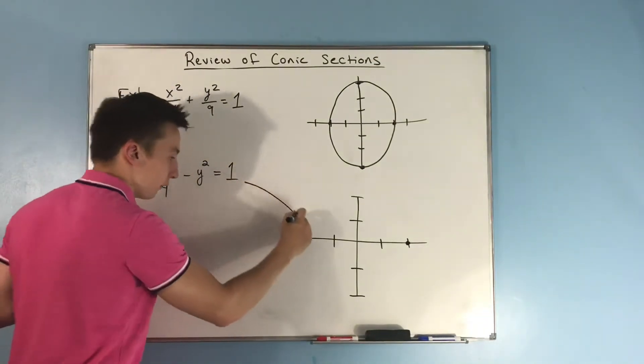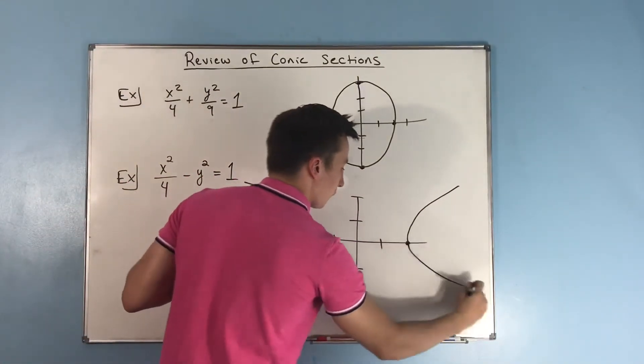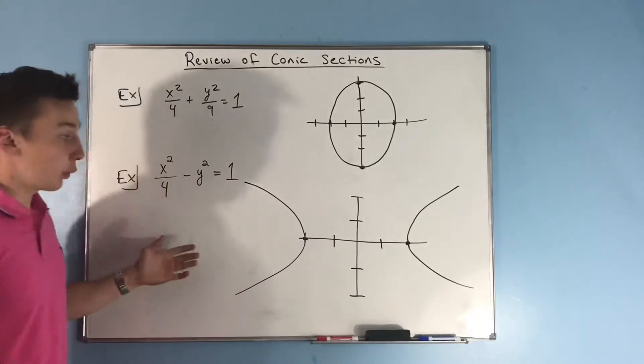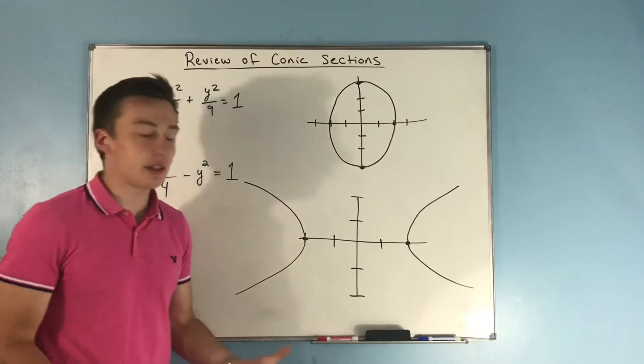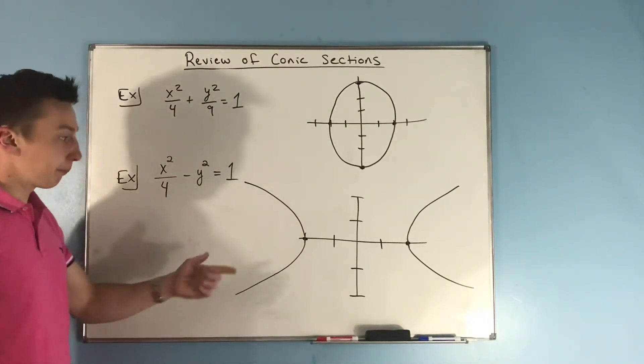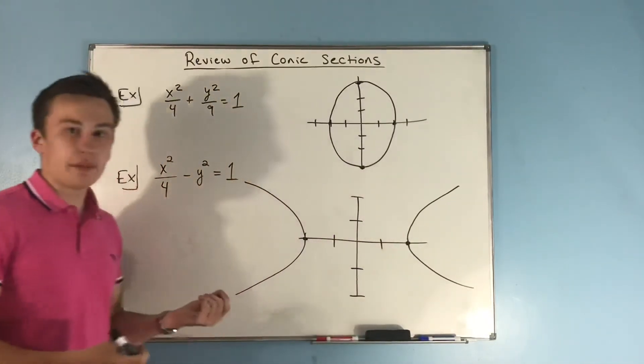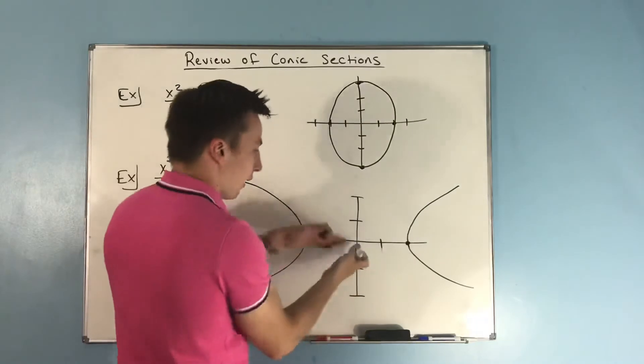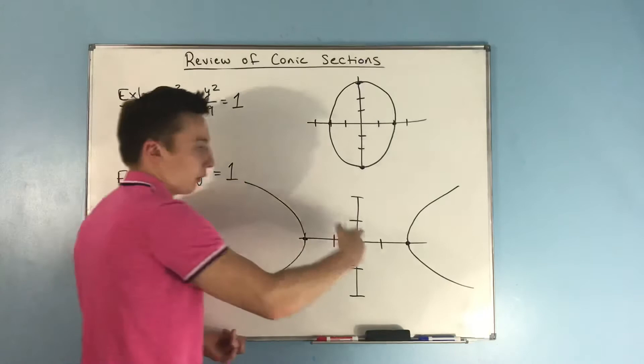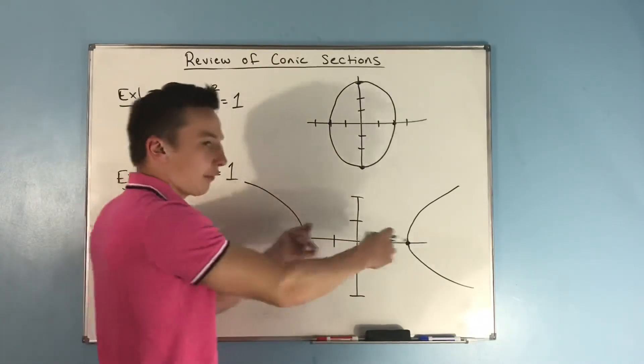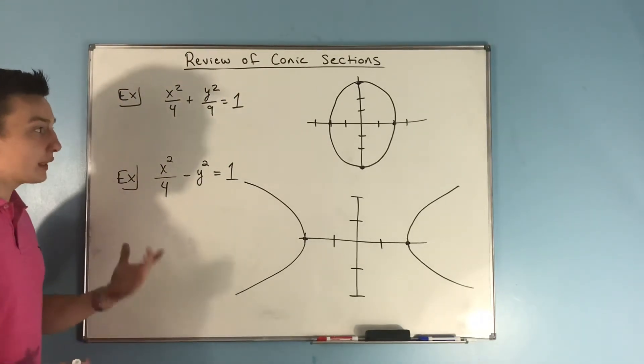As far as how do you know whether it's going to open up and down or left and right, well, our vertices pretty much tell us that already. Our vertices were apart from each other kind of horizontally, right? So they were apart this way and not this way. And that's going to tell you that we're going to be opening left and right. They're not going to be up and down and then opening left and right. That doesn't really make too much sense. So anyways, there you go. You have an ellipse and you have some hyperbolas.